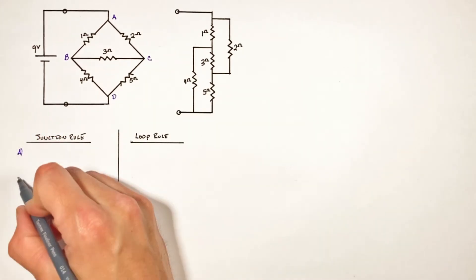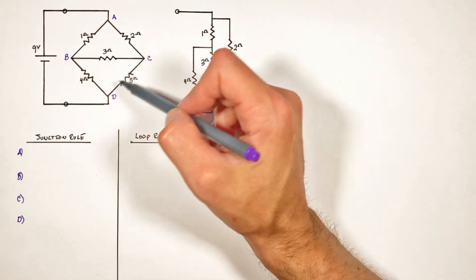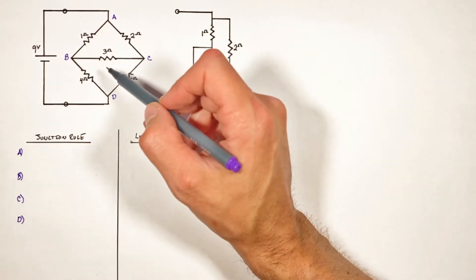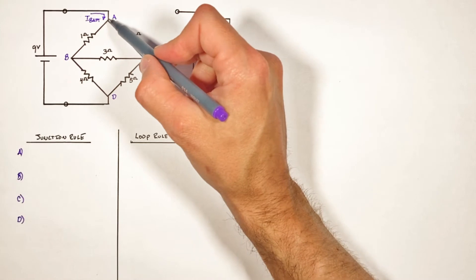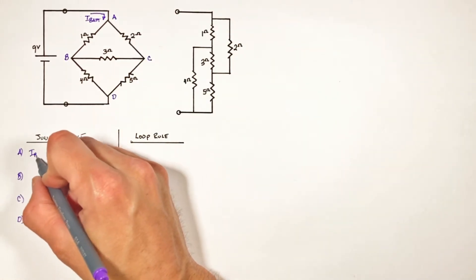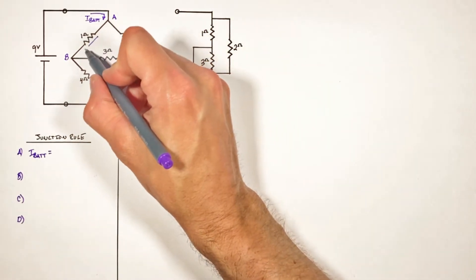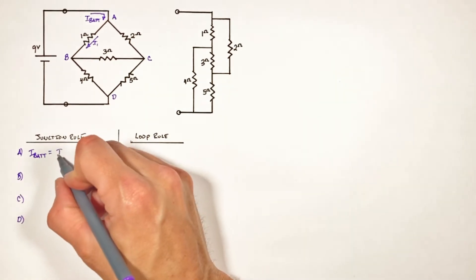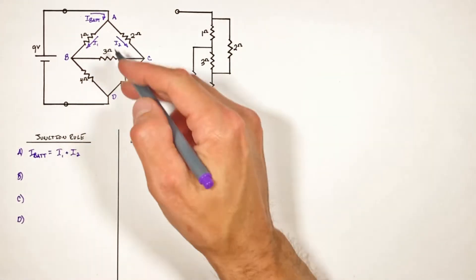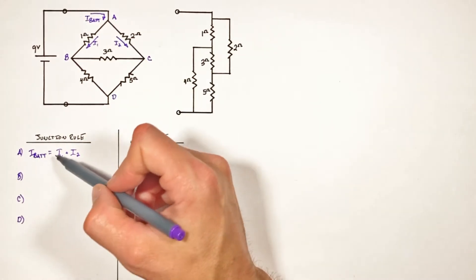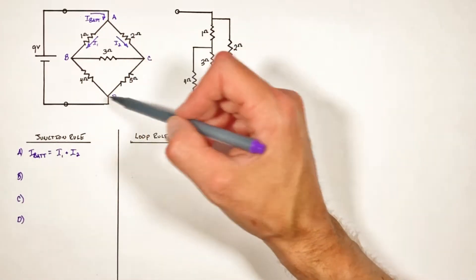Labeling each of the four junctions A, B, C, and D — starting at junction A, we know there's going to be some current coming out of the battery. We're trying to solve for the equivalent resistance, so that current is currently unknown; I'll call it I_battery. So I_battery equals I1 through the 1 ohm resistor plus I2 through the 2 ohm resistor. We don't know any of these values, but we're generating a system of equations to solve for the equivalent resistance.